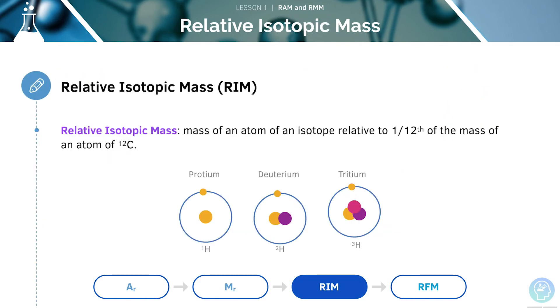The relative isotopic mass is defined as the mass of an atom of an isotope relative to one-twelfth of the mass of an atom of carbon-12.